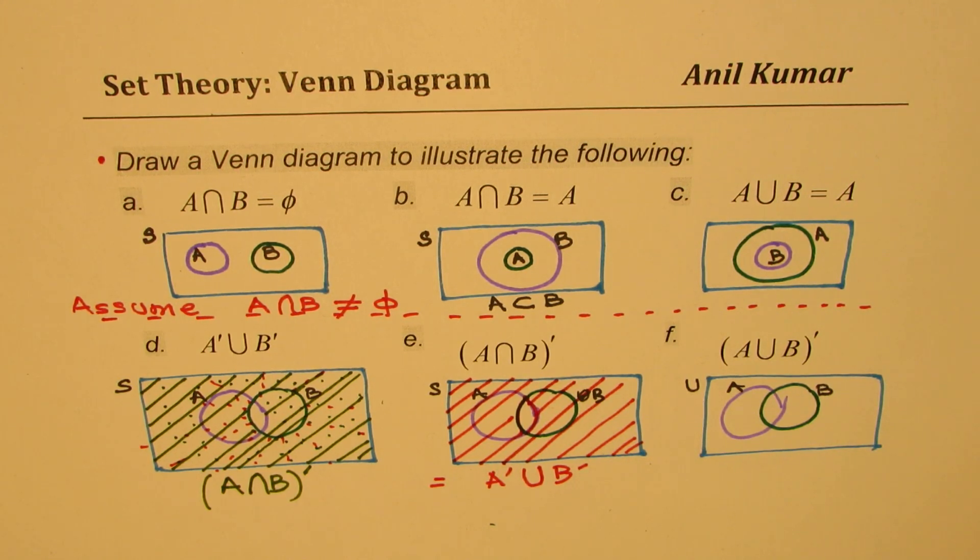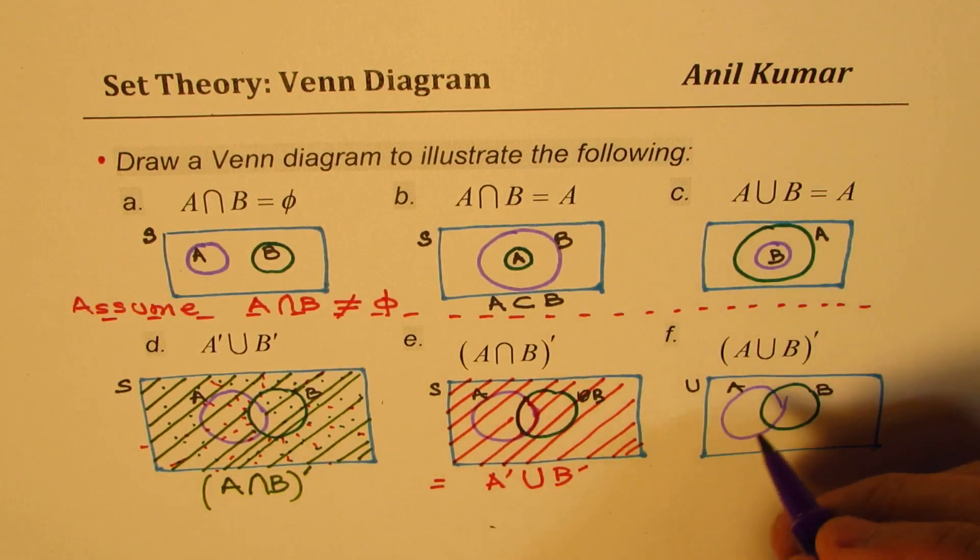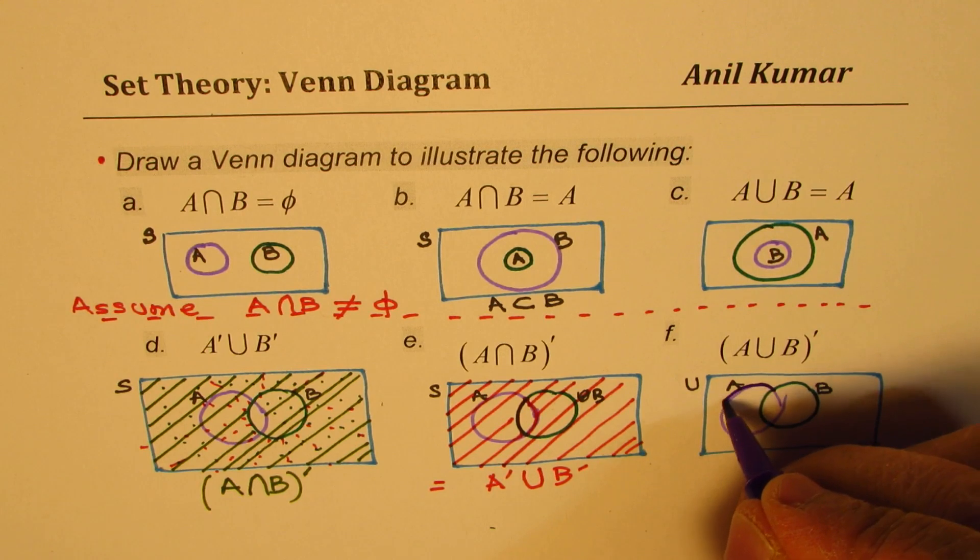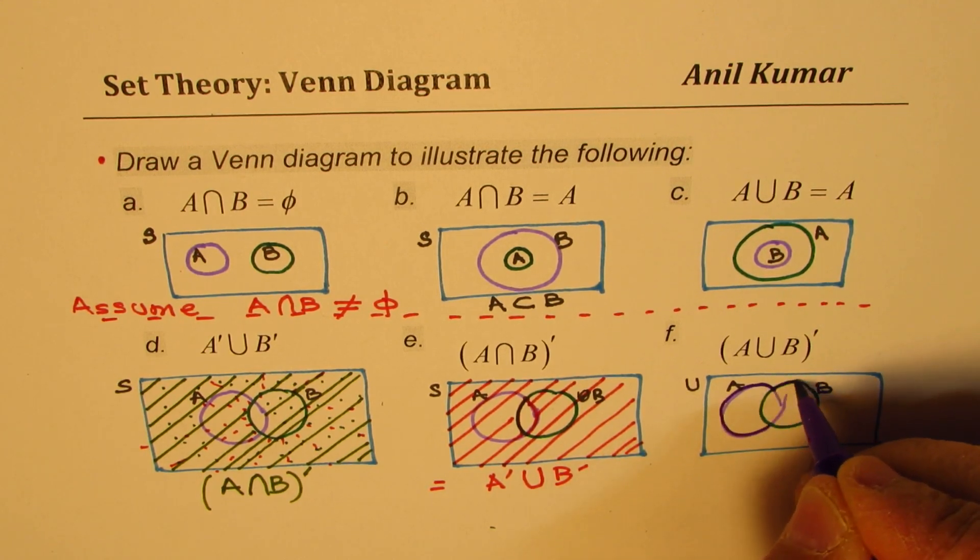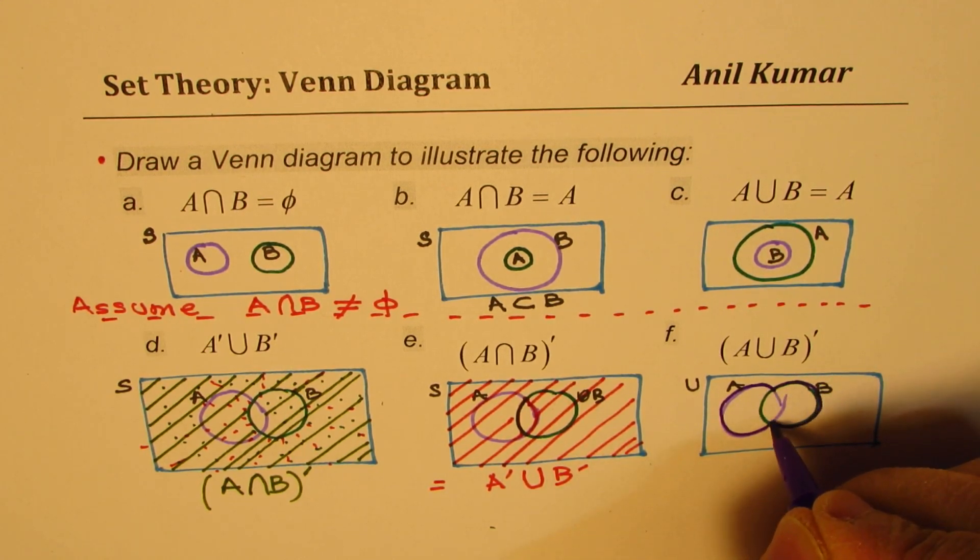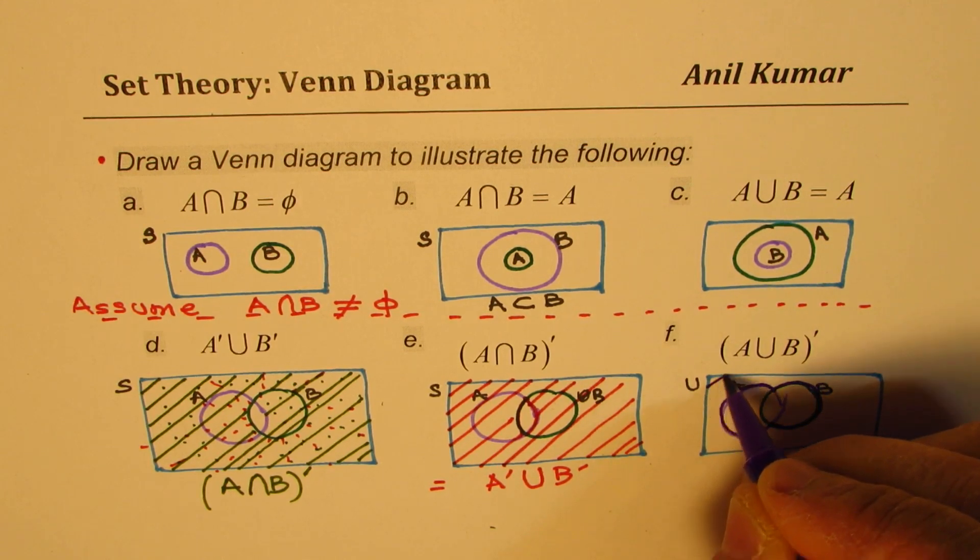Now the last one here is to shade not the union of A and B. So the union of A and B is right there. So we don't want that portion, but everything apart. So outside. Do you see that? So outside is this.